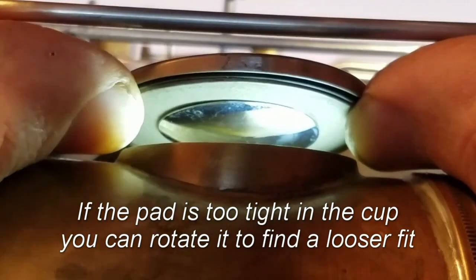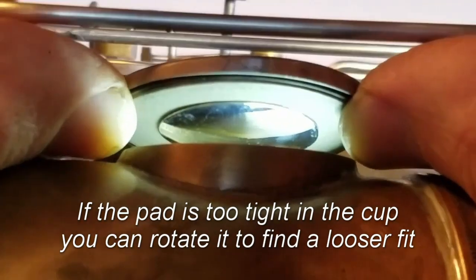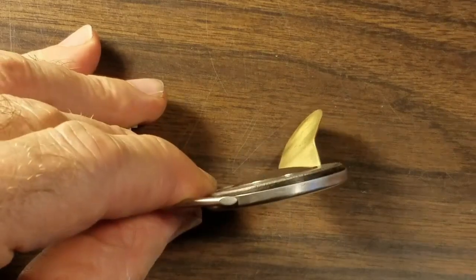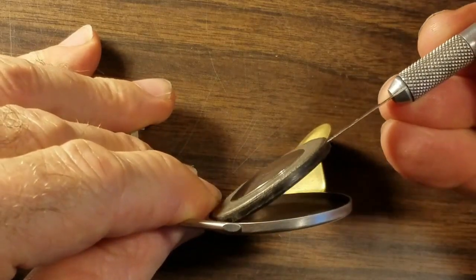If the pad's too tight in the cup, try rotating it to a new position. To remove a pad, you can warm up the cup and pry it out like you do with hot glue.